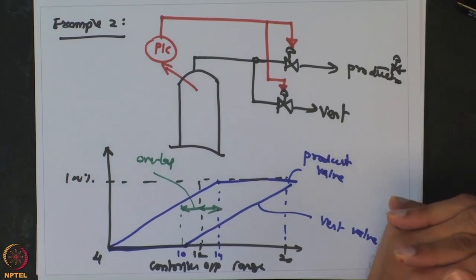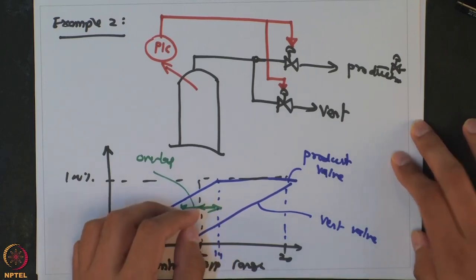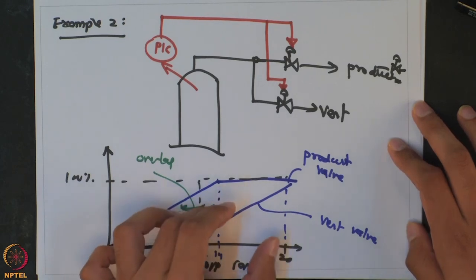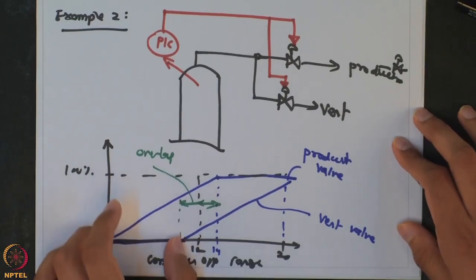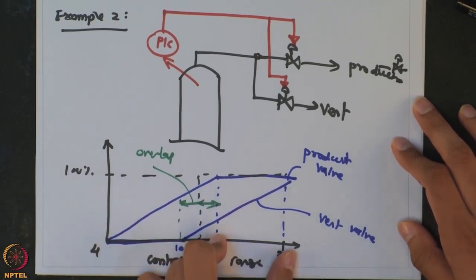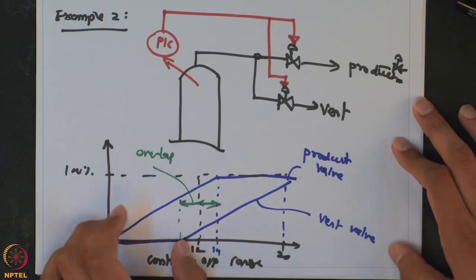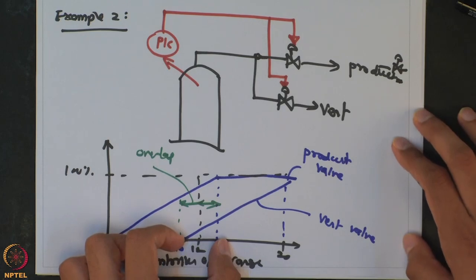Similarly, there are cases where you can have a dead band — a range over which no control action is taken. This is done when the two actions are mutually exclusive. A very commonly used example is a batch reactor where the same jacket is used for both heating and cooling. Up to a certain range you use hot fluid or steam to increase temperature, and in the later range you use cooling water — you do not want to mix steam with cooling water. So as a protection, there is a dead band where no control valve is operational. You can also have a dead band inside a split range design.